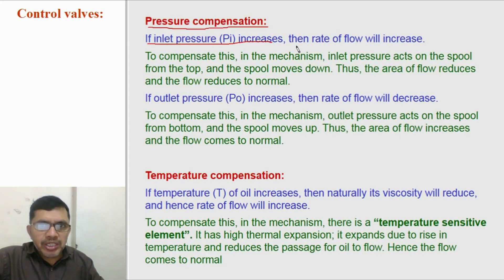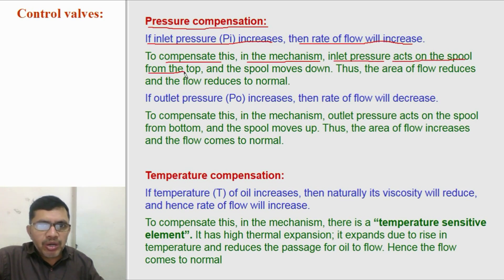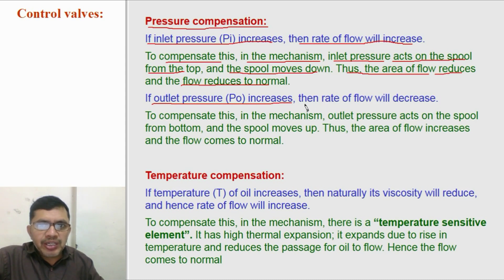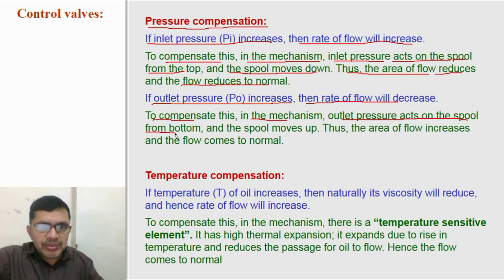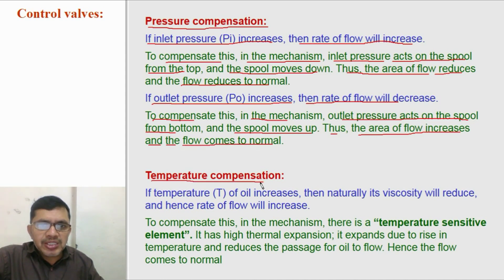If inlet pressure is more than the outlet pressure, then the rate of flow will be more. To compensate this, in the mechanism, inlet pressure acts on the spool from the top. The spool moves in the downward direction, thus the area of flow reduces and the flow will reduce to normal. If outlet pressure is more than the inlet pressure, then the rate of flow will reduce. To compensate this, in the mechanism, the outlet pressure acts on the spool from the bottom and the spool will move in the upward direction. Thus, the area of flow will increase to allow more oil and the flow becomes normal.